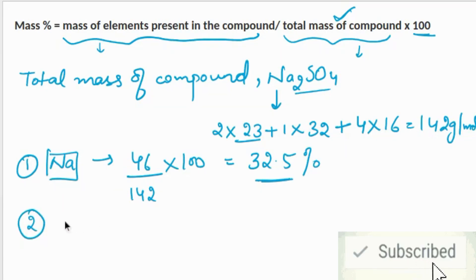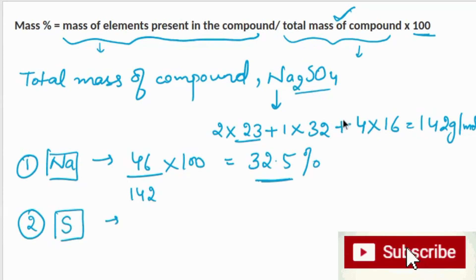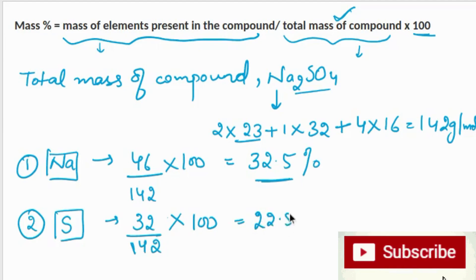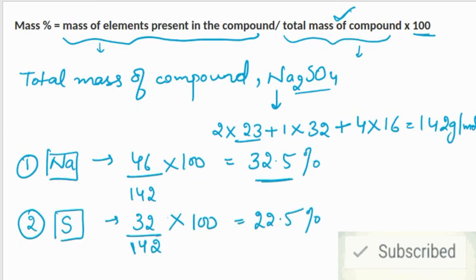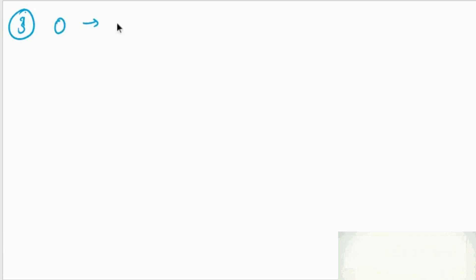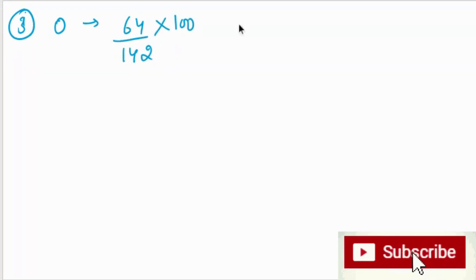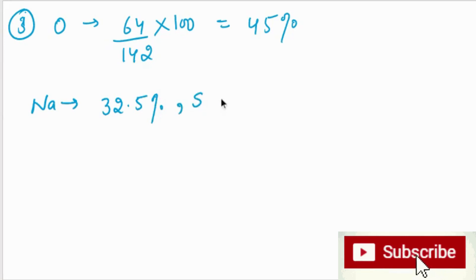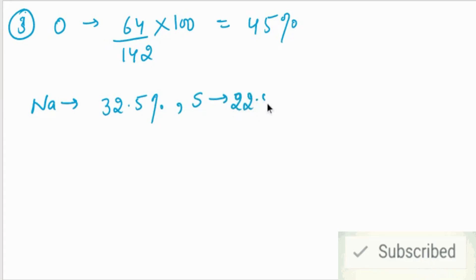Now we find the mass percent of sulfur and oxygen. For sulfur: 32 divided by 142 into 100, which gives 22.5%. For oxygen: there are 4 oxygen atoms, so 4 × 16 = 64; divided by 142 into 100 gives 45%. So the final results are — sodium: 32.5%, sulfur: 22.5%, and oxygen: 45%.